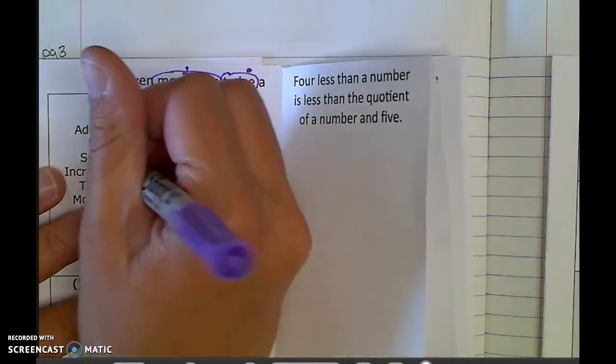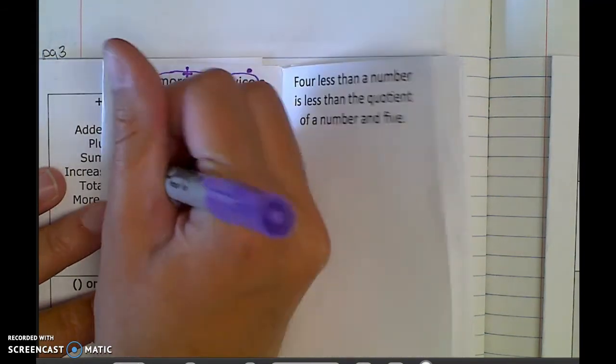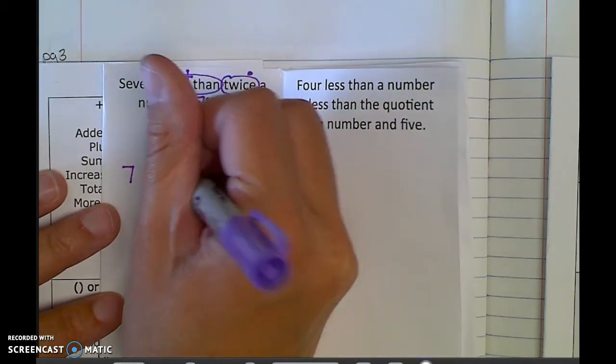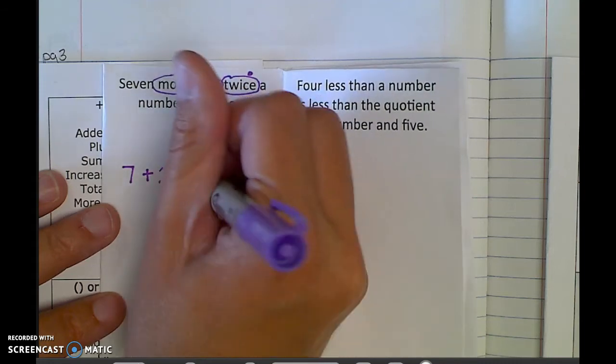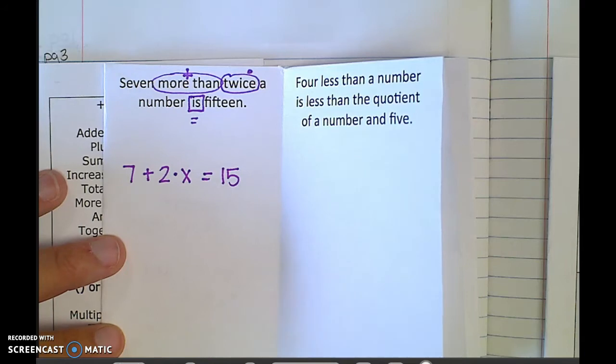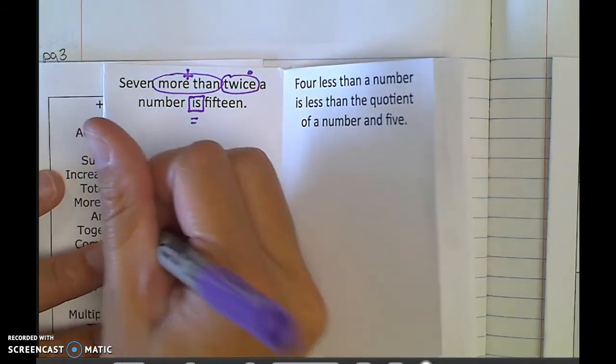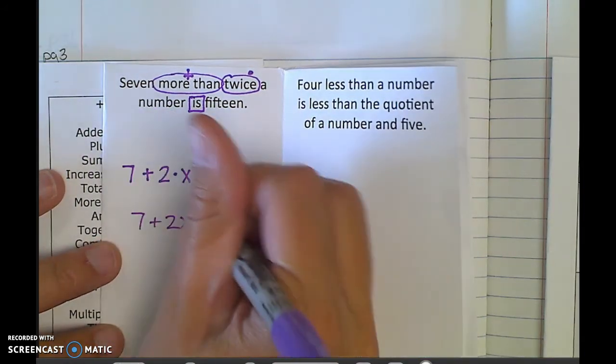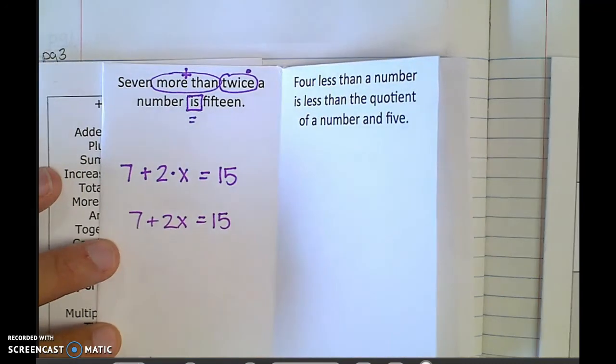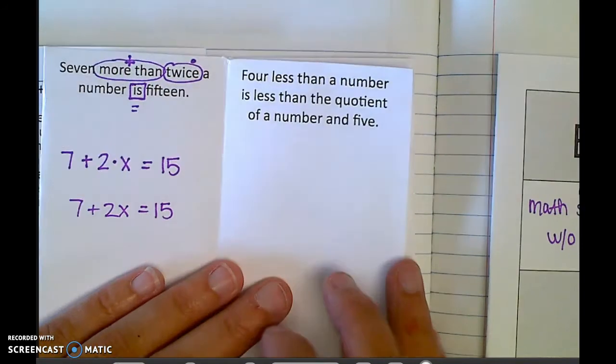A number is 15. Is is a really good equal type word. So then when I go through and write this out, it should be really easy because everything should be here. So I have the number 7. More than is plus. Twice is 2 times a number I don't know. So x is 15. And we're just writing the expression. So if we're really done, you could write it to look a little nicer maybe like that. But you don't need to solve or do anything.